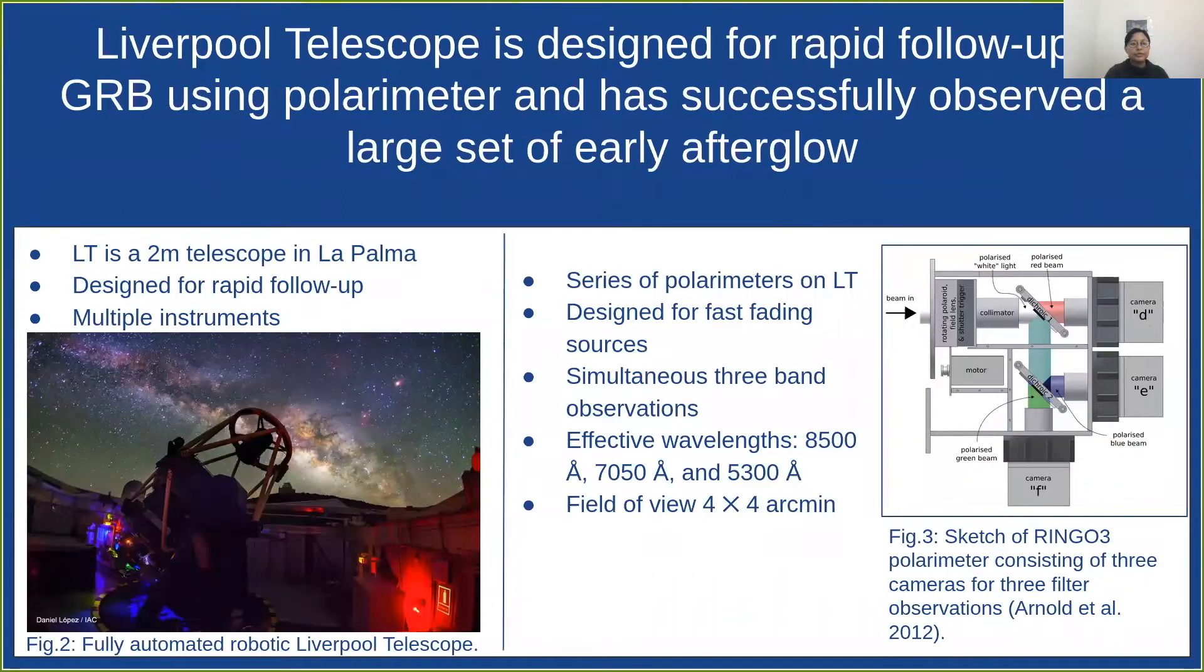Here in the poster I talk about how dedicated telescopes like Liverpool telescope, which is a two meter class telescope designed for rapid follow up of different time domain sciences and here focusing on GRB, has been very successfully observing early afterglow with polarimeter. Here is a sketch of Ringo 3, the polarimeter we use.